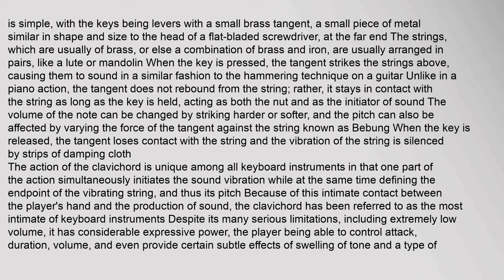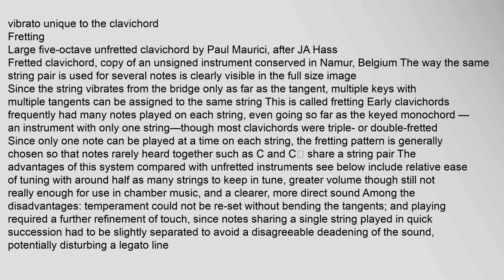When the key is released, the tangent loses contact with the string and the vibration of the string is silenced by strips of damping cloth. The action of the clavichord is unique among all keyboard instruments in that one part of the action simultaneously initiates the sound vibration while at the same time defining the end point of the vibrating string, and thus its pitch. Because of this intimate contact between the player's hand and the production of sound, the clavichord has been referred to as the most intimate of keyboard instruments. Despite its many serious limitations, including extremely low volume, it has considerable expressive power — the player being able to control attack, duration, volume, and even provide certain subtle effects of swelling of tone and a type of vibrato unique to the clavichord.